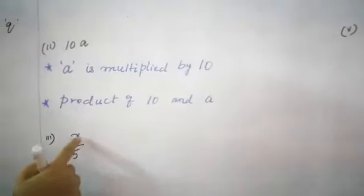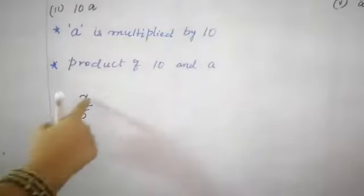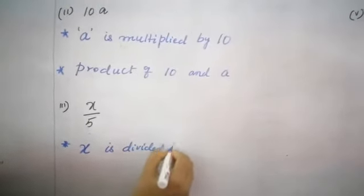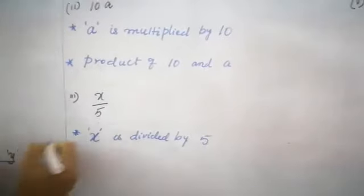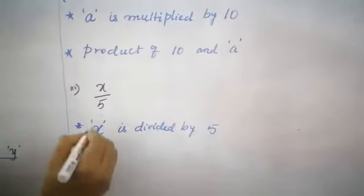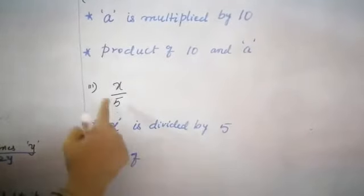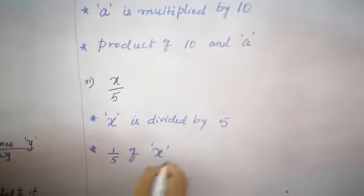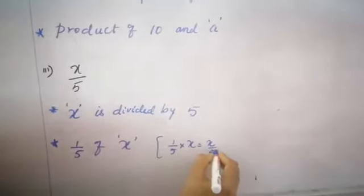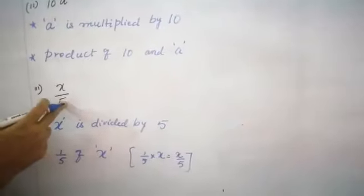The expression is X by 5. First statement: X is divided by 5. Whenever you use variables, please use the apostrophe mark, children. One more statement: one fifth of X. 'Of' means it's a multiplication sign, so one fifth of X becomes X by 5. 'Of' is also a sign of product.